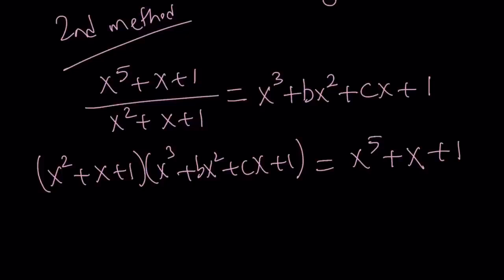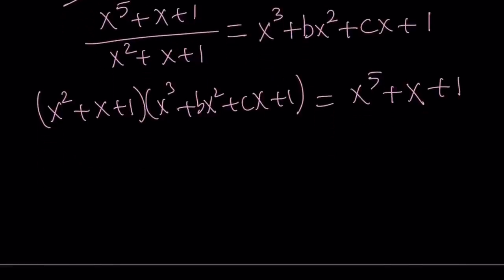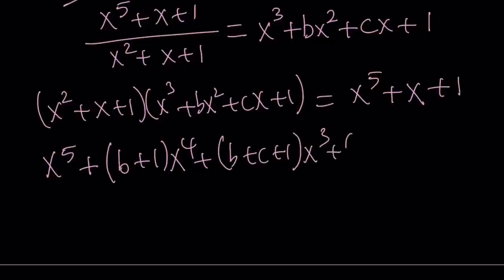Now, if you distribute this, and I'm just going to give you the answer without further ado, you can write this as, when you multiply, you're going to get x to the fifth plus (b plus one)x to the fourth plus (b plus c plus one)x to the third plus (b plus c plus one)x squared plus (c plus one)x plus one.